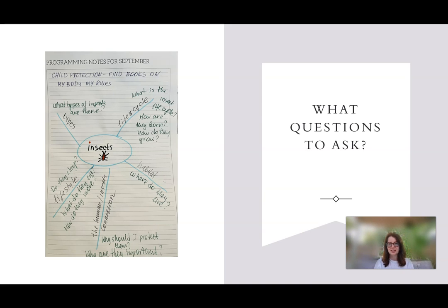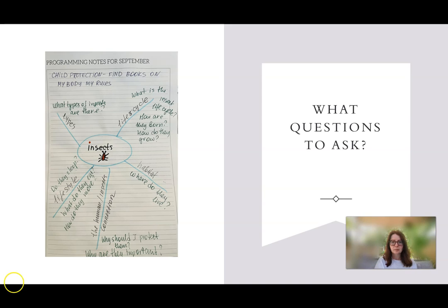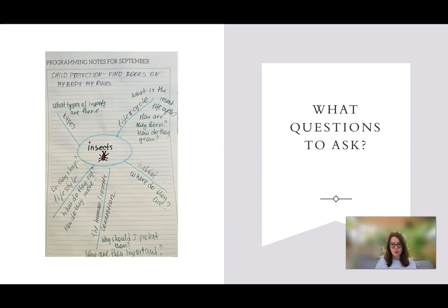You can ask: Where do they live? Why should we protect them? Are they scary? Are they important? Children may add interesting questions of their own. You can work on this map as a team with another teacher, and ask: Do they sleep? What do they eat? How do they move? What types of insects are there? There are many questions to be asked, and you can continue branching out.